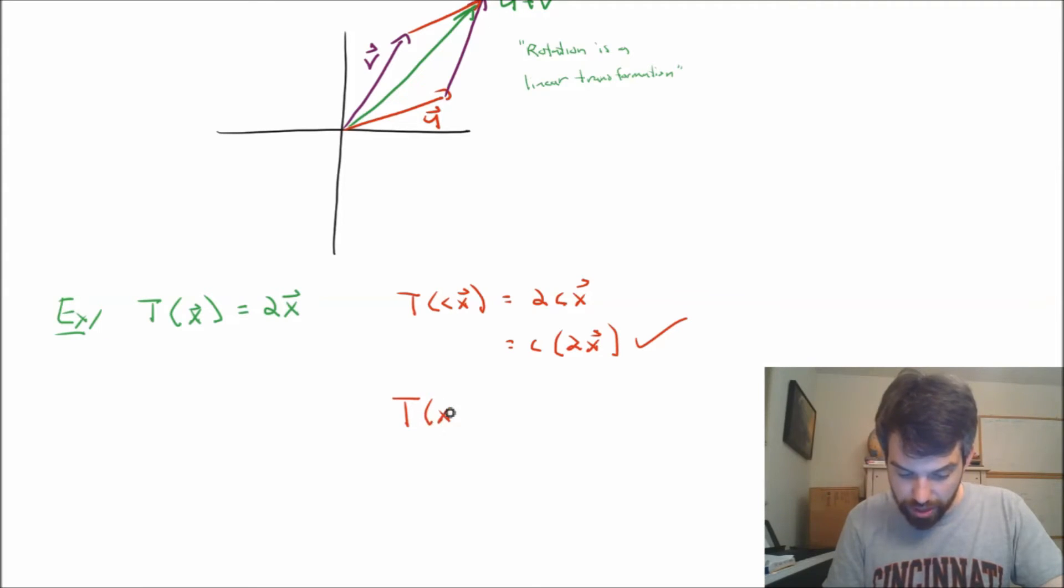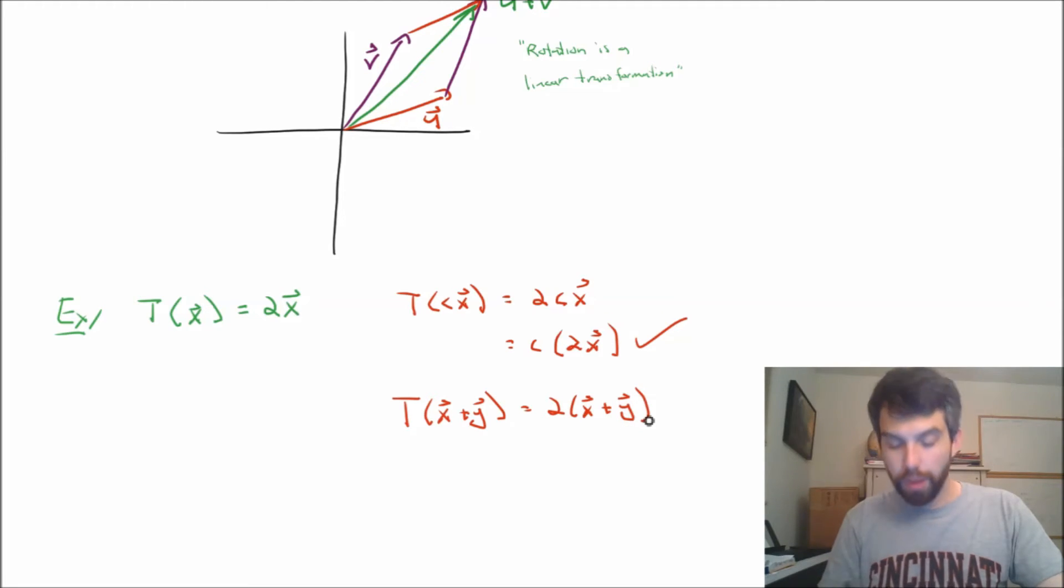Likewise, I can go and take the transformation of x plus y and this is going to be twice x plus y. That's its definition. But we know that scalar multiplication distributes over vector addition.